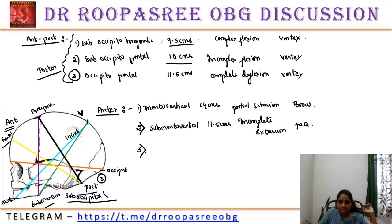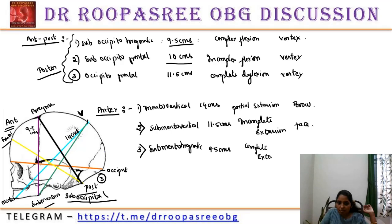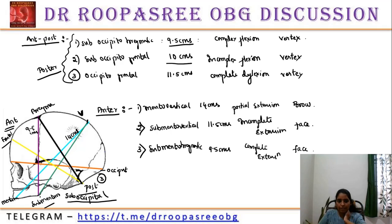The third anterior diameter is submento-bregmatic. It is about 9.5 centimeters. It is complete extension and it is a face presentation. There are a lot of questions on this topic.